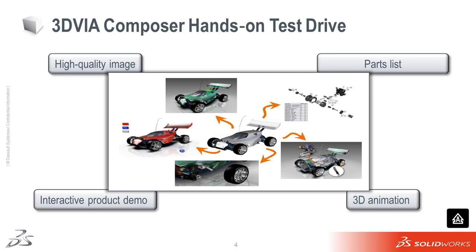Enhancements that you will make include: provide a high-quality image for the manual cover, create a parts list suitable for both hard copy and online technical illustrations, create an interactive product demo for viewing with 3D Via Composer player, create a 3D animation that depicts a service procedure, and update your images and animation with 3D VX1 design changes. Let's get started!